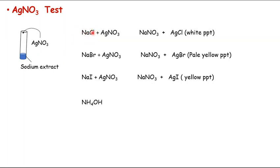If sodium chloride is present, it reacts with silver nitrate to give sodium nitrate and silver chloride. Silver chloride appears as a white precipitate. If the organic compound contains bromine, the Lassaigne's extract contains sodium bromide, and adding silver nitrate gives silver bromide, which is a pale yellow precipitate. If iodine is present, we get silver iodide, which is yellow.